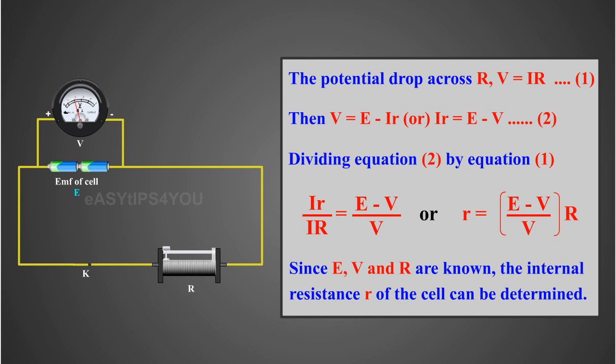Dividing equation 2 by equation 1: Ir divided by IR equals (E minus V) divided by V, or r equals (E minus V) divided by V, multiplied by R. Since E, V, and R are known, the internal resistance r of the cell can be determined.